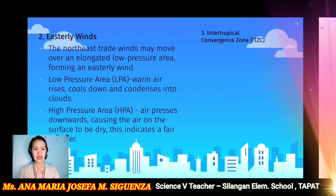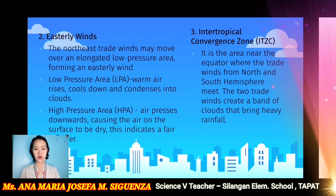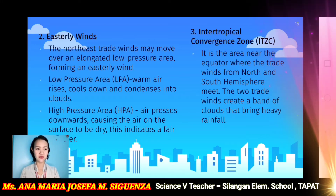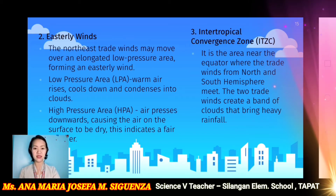The last one is the ITCZ or the Intertropical Convergence Zone. It is the area near the equator where the trade winds from the north and south hemispheres meet. The two trade winds create a band of clouds that brings heavy rainfall. Those are a few of the weather disturbances that we experience here in the Philippines.